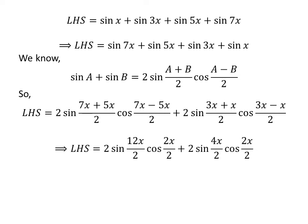Further simplification gives us: left-hand side is equal to 2 times sine of 12x/2 times cosine of 2x/2, plus 2 times sine of 4x/2 times cosine of 2x/2. Cancelling the common factor of 2 in numerator and denominator gives us: left-hand side equals 2 times sine of 6x times cosine of x, plus 2 times sine of 2x times cosine of x.